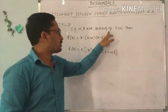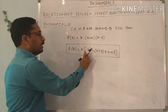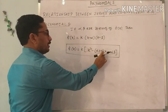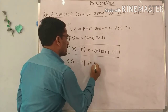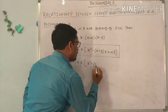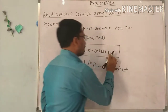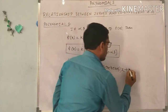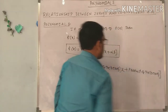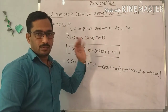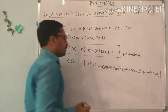If alpha comma beta are the zeros of a quadratic polynomial F of X, then the quadratic polynomial is written as F of X equals K into X squared minus sum of zeros into X plus product of zeros, where K is some constant depending on the values of alpha and beta.